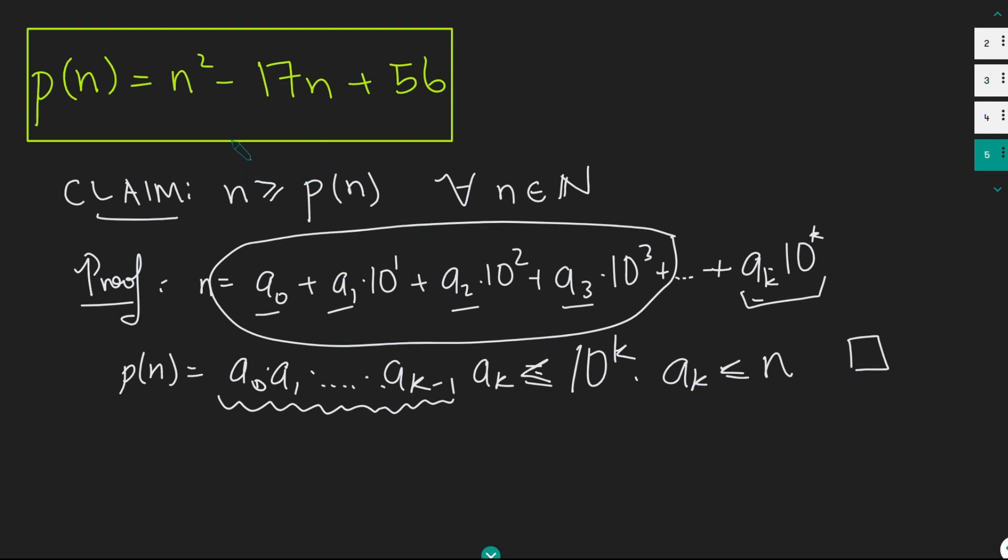Okay, so if we do have a positive integer n which satisfies this, well, I can then use the fact that we know that for all values of n, p of n is less than or equal to n. And substitute that in here and I get n squared minus 17n plus 56 must be less than or equal to n. And rearranging this gives me n squared minus 18n plus 56 must be less than or equal to 0. Now we can just use some basic algebra tricks here to factorize this. We get n minus 14 times n minus 4 is less than or equal to 0.